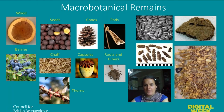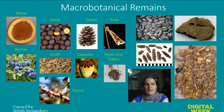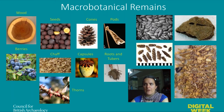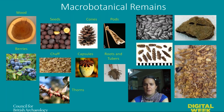Macro-botanical remains are those we can see with the naked eye: wood, seeds, cones, roots and tubers, capsules, chaff, thorns, and berries. Many are not preserved unless specific conditions exist — berries only survive at very specific fire temperatures in carbonized deposits. Macro-remains are found in three different types of conditions: carbonized, waterlogged, or mineralized. Mineralized deposits involve replacement of phosphate into organic matter; carbonized remains are produced when items contact fire without being completely burnt; and waterlogged is when sites are underwater.